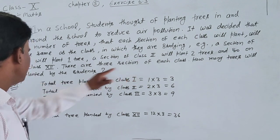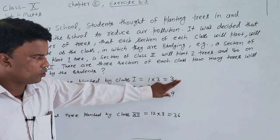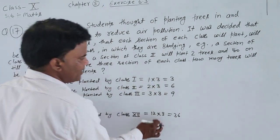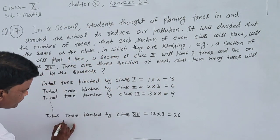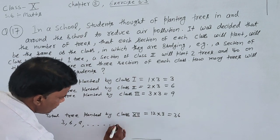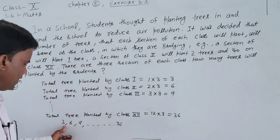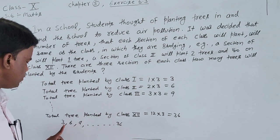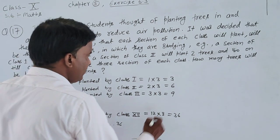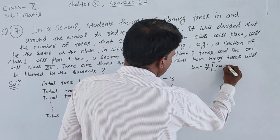Total trees will be planted by the students. To find the total, we need to find the sum. The given series is 3, 6, 9, and so on, last number is 36. First term to last term, the total class is 12, means 12 terms.